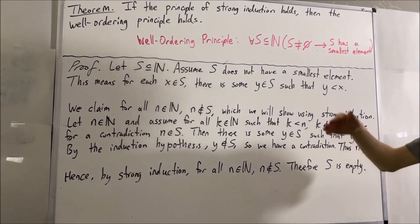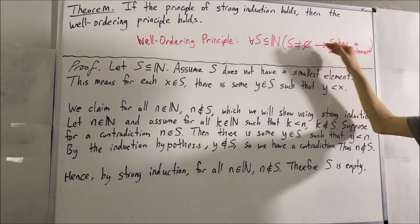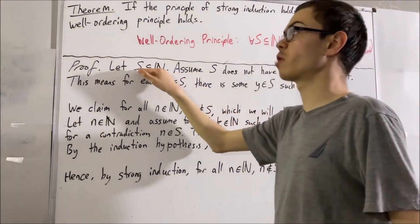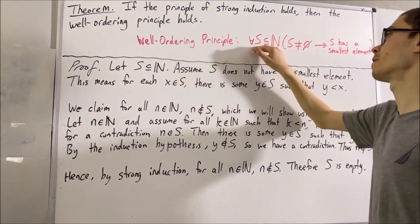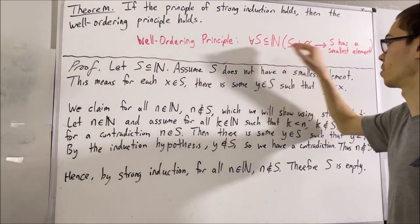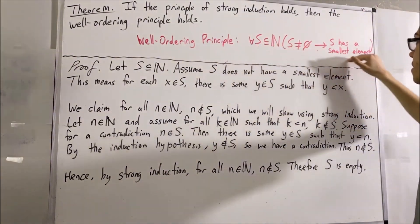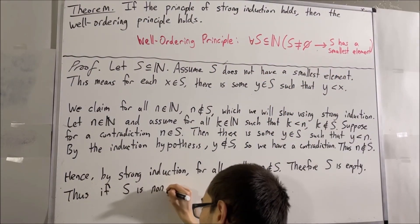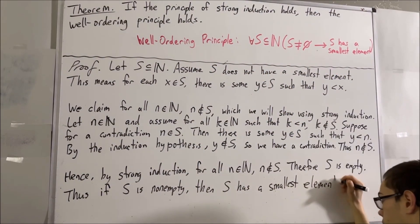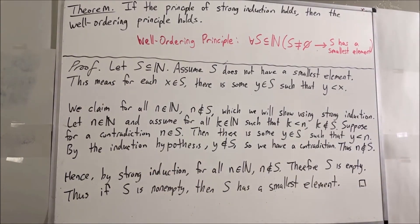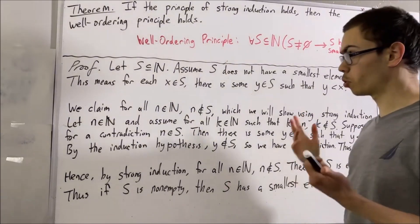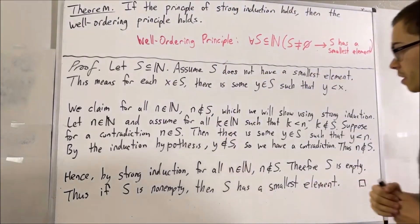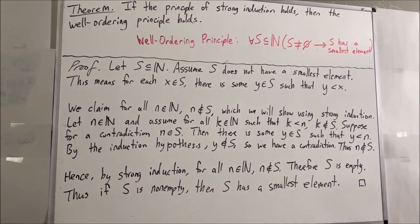So we have shown that if S does not have a smallest element, then S is empty. Therefore, the contrapositive tells us that if S is not empty, then S does have a smallest element. Since S was an arbitrary subset of the natural numbers, this means for every subset S of the natural numbers this is true. So we have proven the well-ordering principle. This completes the proof. This is one way in which you could prove that if the strong induction principle holds, then the well-ordering principle holds. Thank you.